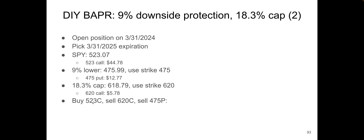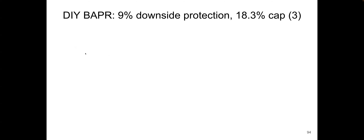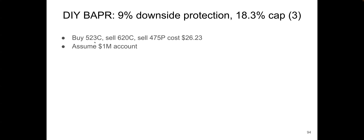In order to create the same profit/loss picture, we need to buy the at-the-money 523 call and sell the higher 620 call — this forms the right side, the bull vertical spread. And then on the left side, we need to sell a 475 put. The total out-of-pocket cost is $26.23.